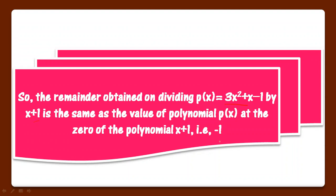So the remainder obtained on dividing px by the linear polynomial equals the value of px at the zero of that polynomial. In the next part we'll do questions related to the remainder theorem. If you have any doubt, you can ask your queries in the comment section.